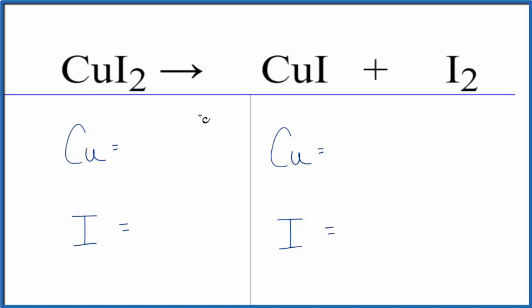So to balance the equation we're going to count the atoms up on each side. We have one copper and two iodine atoms. Product side we have the one copper, then we have one plus two. So we have three iodine atoms.